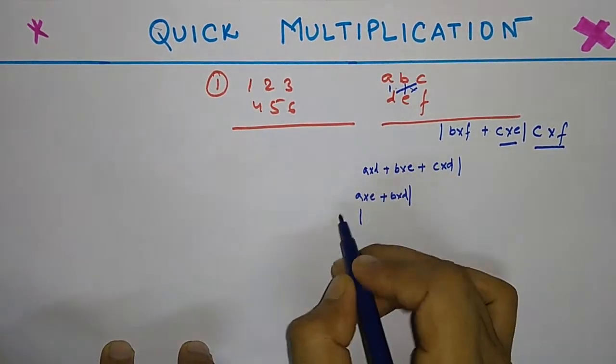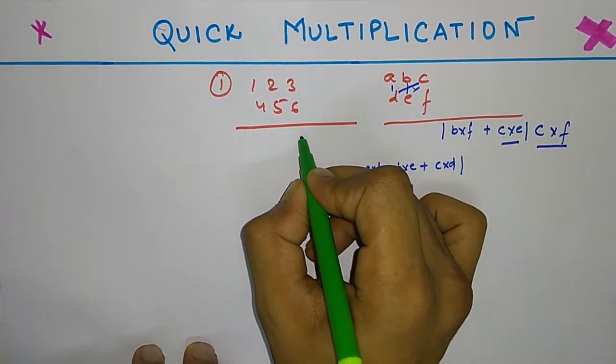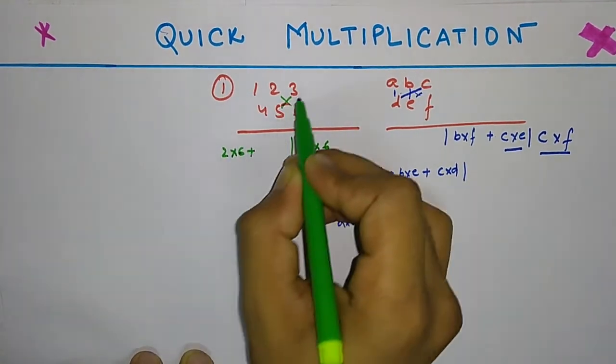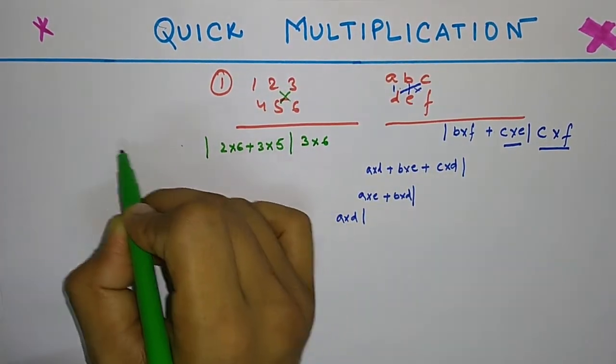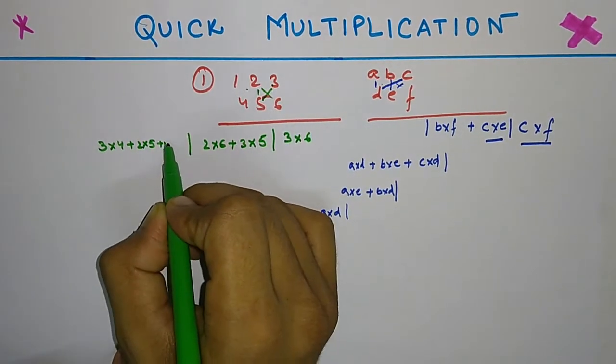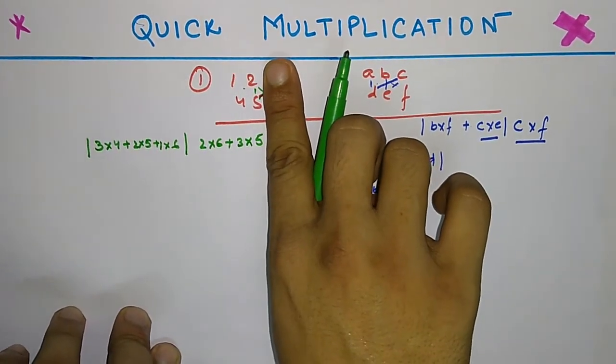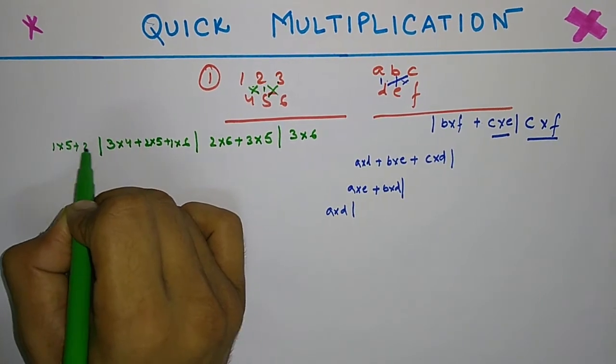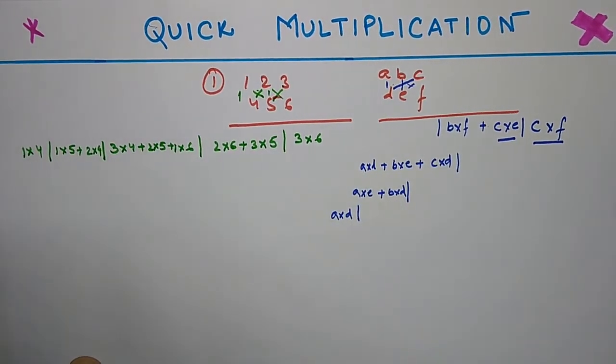Applying it over here, it will be 3 into 6. Next crosswise: 2 into 6 and 3 into 5. Then we are going to multiply all the numbers: that is 3 into 4 plus 2 into 5 and 1 into 6. For the next one we are going to move on by taking these four numbers crosswise: 1 into 5 and 2 into 4.